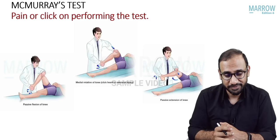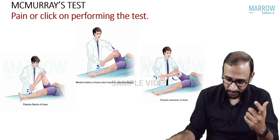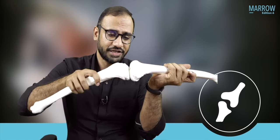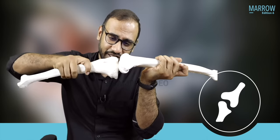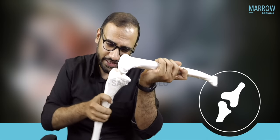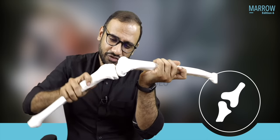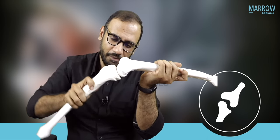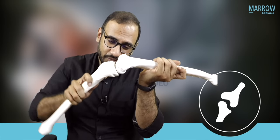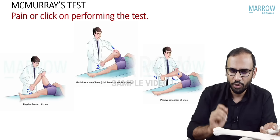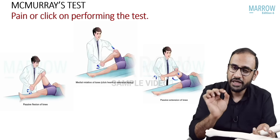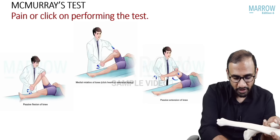You have the McMurray test and the Apley's grinding test. In the McMurray test, you flex and extend the knee while rotating the tibia. As you rotate the tibia, the injured piece of meniscus will come between the tibia and the femoral condyle, causing the patient to scream in pain — the symptoms are provoked and your diagnosis is complete. There can be either pain or a clicking sound upon performing the McMurray test.